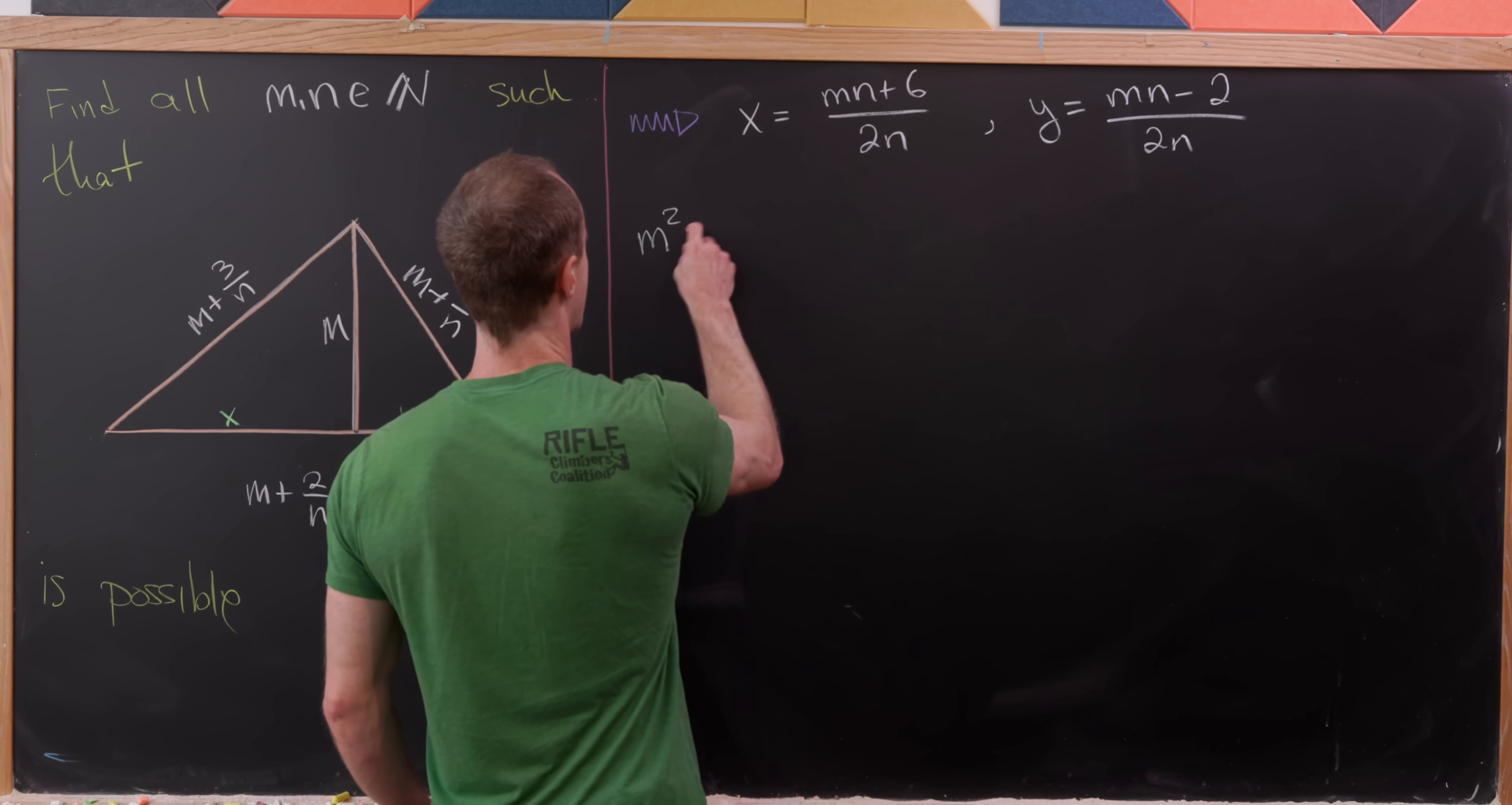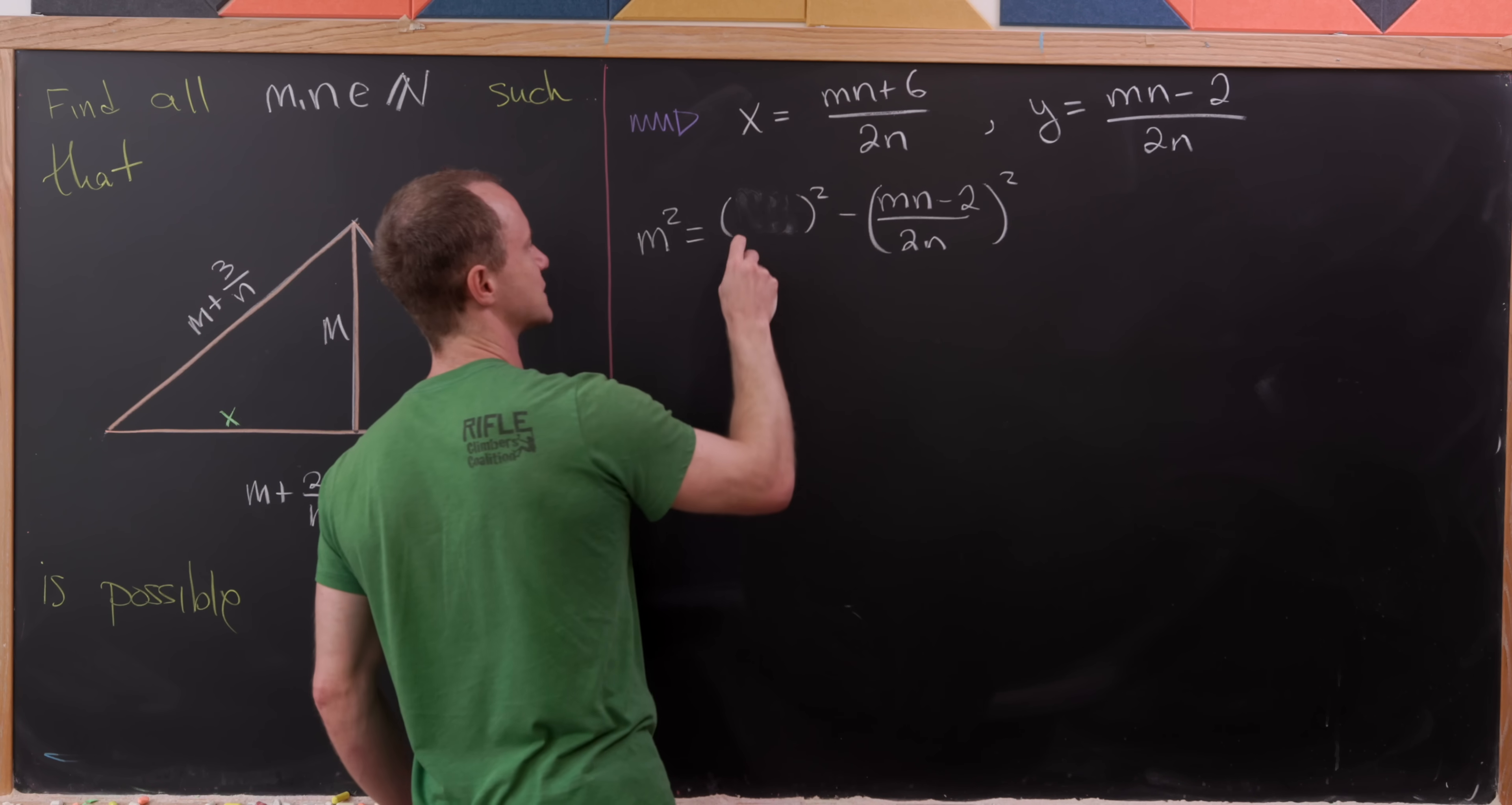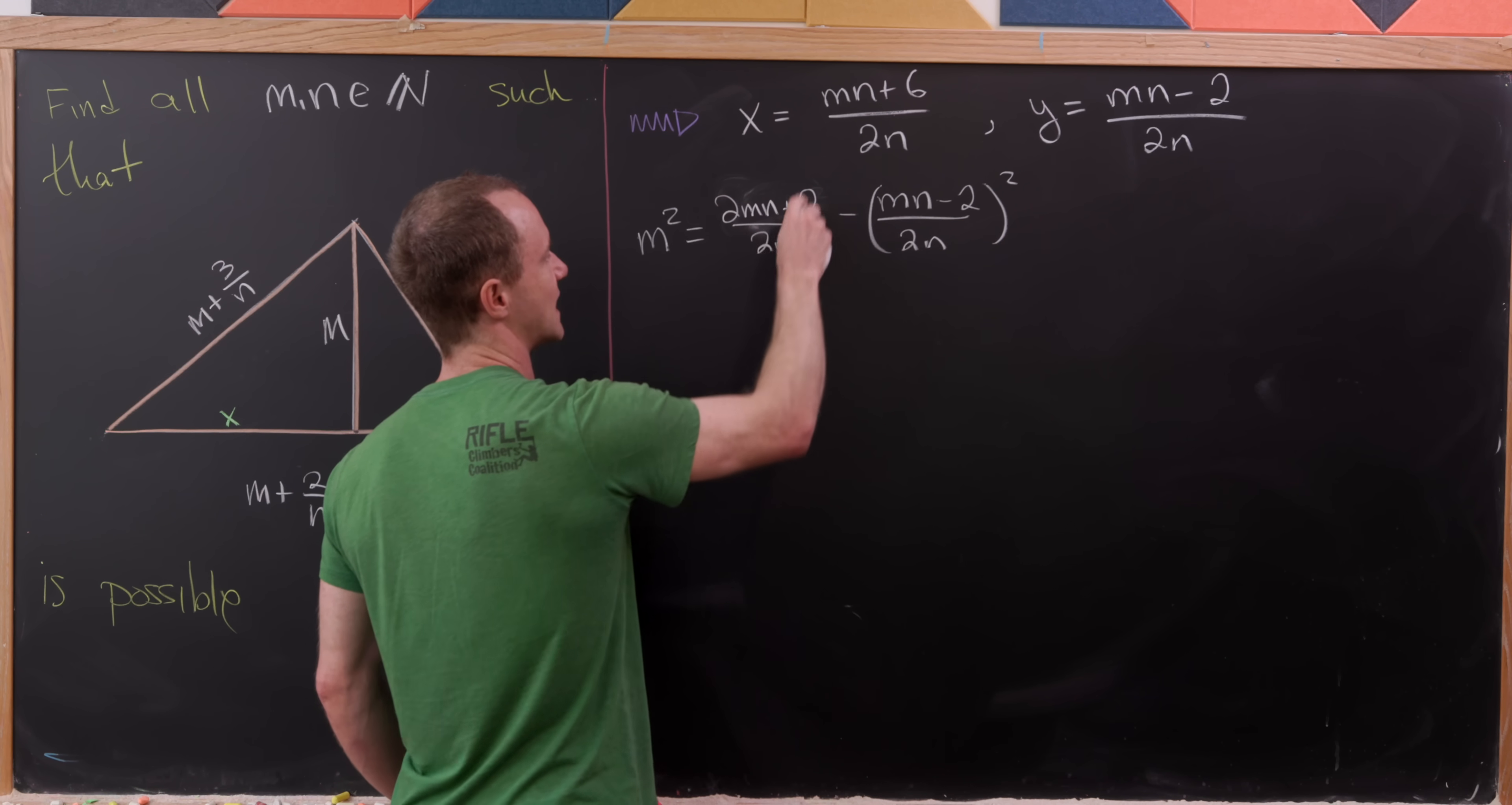We'll have m squared is m plus 1 over n squared minus y squared. But let's observe that this y squared is m n minus 2 over 2 n quantity squared. So next up, what I'll do just for some simplification is to take this m plus 1 over n, and I want to write it as m n plus 1 over n, just to simplify it a bit. And then one more thing I'm going to do is maybe multiply everything by 2 in the numerator and the denominator to give myself the same denominator as this. So that'll be 2 m n and then plus 2 over 2 times n.